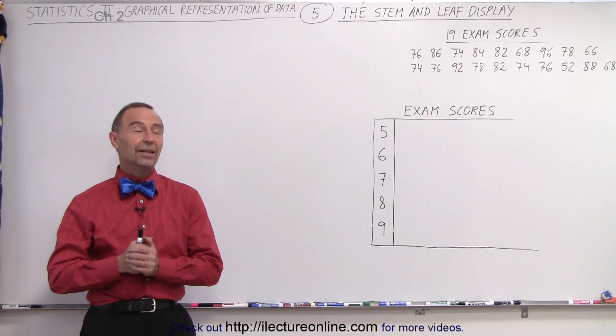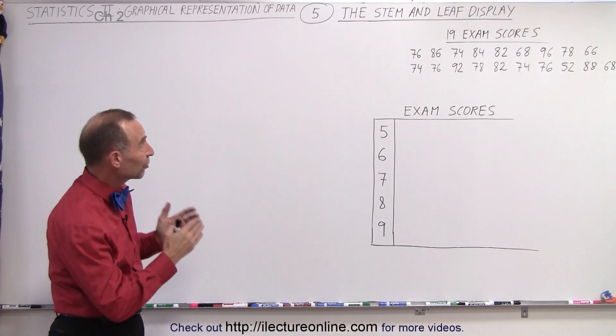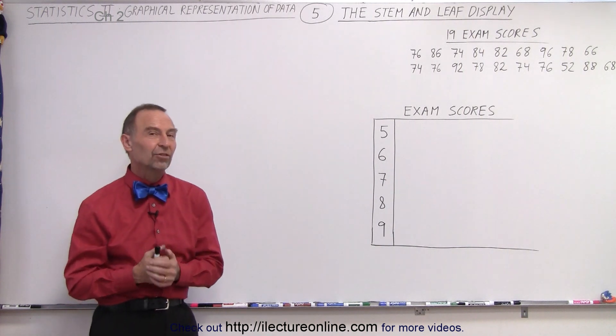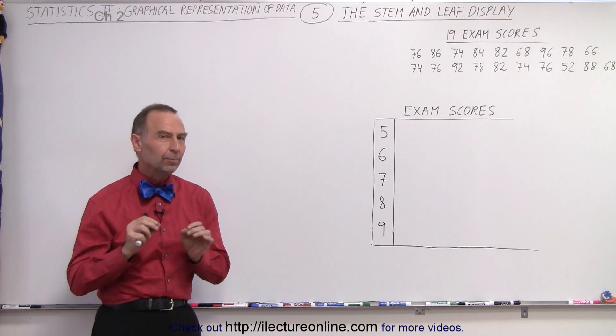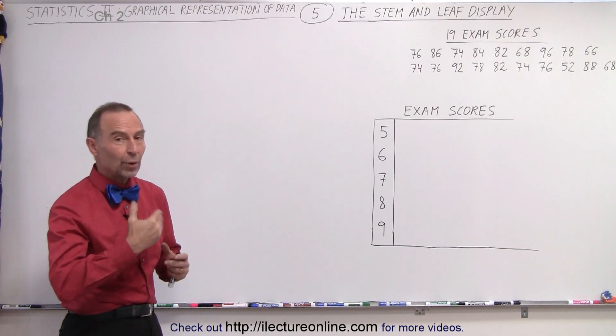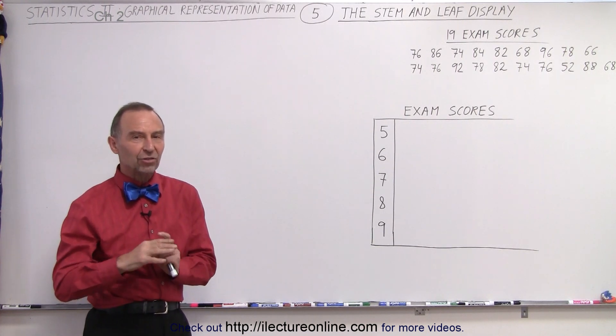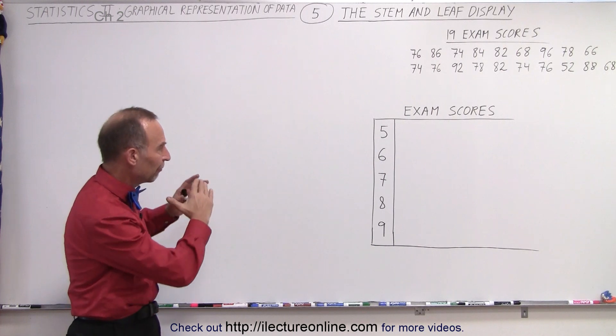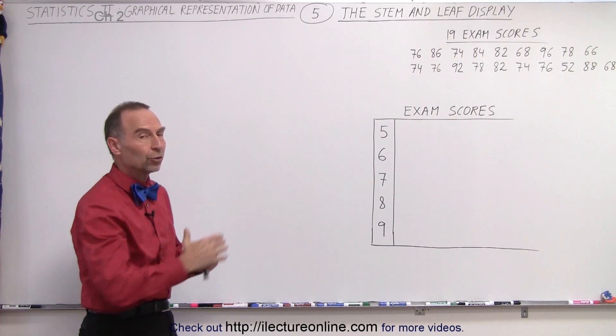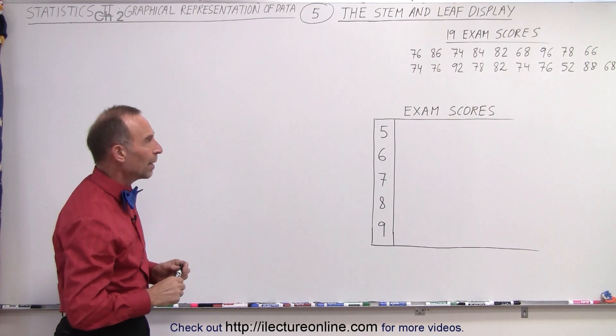Welcome to our lecture online. Now let's take a look at our next graph, the stem and leaf display. Kind of like the dot plot, it gives you a very quick idea of what the distribution is of a particular data set without having to first tabulate the data and then put it into a graph.